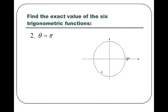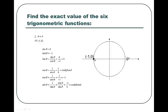For theta equals pi, pi is right over here at negative 1, 0. So cosine is negative 1 and sine is 0. Tangent is 0 divided by negative 1, which is 0. Then you have your three reciprocals: the reciprocal of 0 is undefined; the reciprocal of negative 1 is negative 1; and cotangent is the reciprocal of tangent. Again, 2 are undefined, 2 are 0, and these two are negative 1.